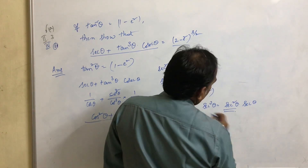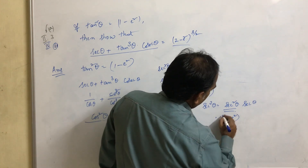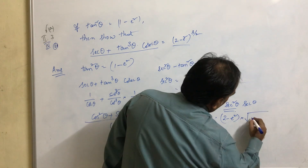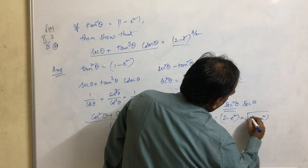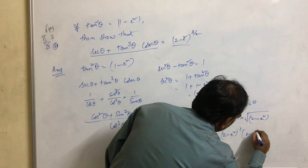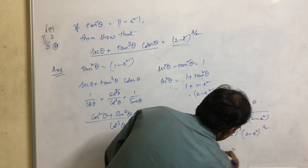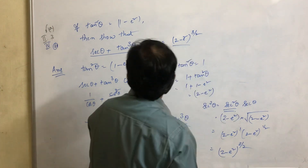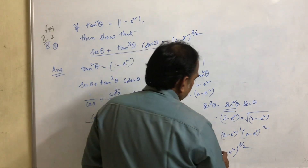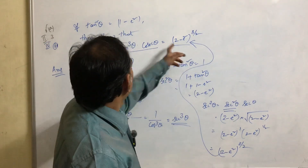The value of secant squared theta is 2 minus e squared, and secant theta is the square root of 2 minus e squared. So secant cubed theta equals (2 minus e squared) to the power 1, times (2 minus e squared) to the power 1 by 2, which gives 2 minus e squared whole power 3 by 2 — which is the RHS. We are able to prove it.